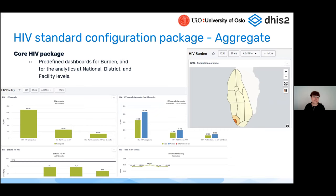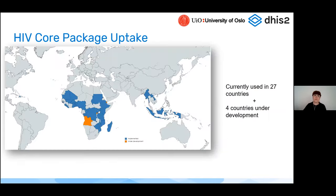On the HIV front, we have available for everyone to download the HIV standard configuration package, also called the core package, which is the aggregate package with all the core information a program might want to collect. It comes with predefined dashboards on burden and different levels of analysis depending on national, district, and facility levels. The core package is currently implemented in 27 countries, with four more under development.